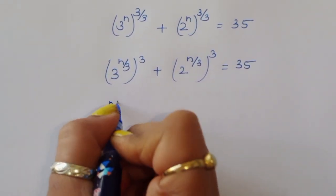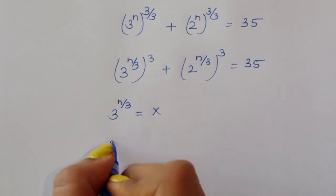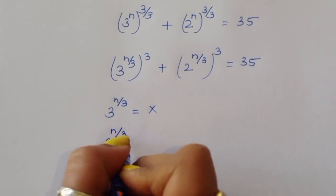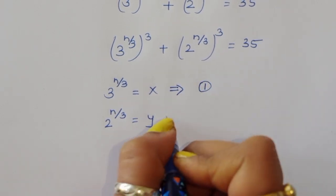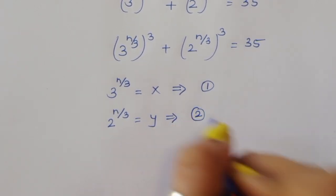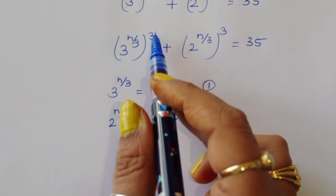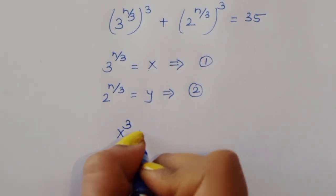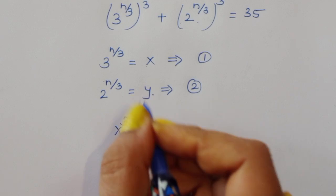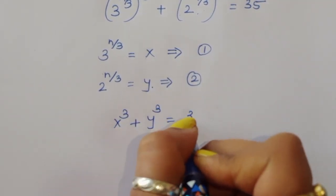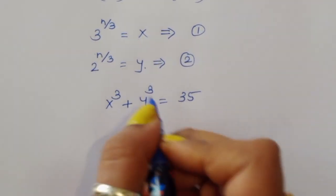Let x = 3^(n/3) (equation 1) and y = 2^(n/3) (equation 2). So the expression becomes x³ + y³ = 35.